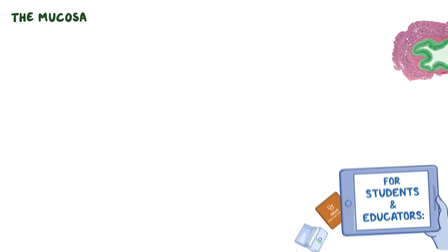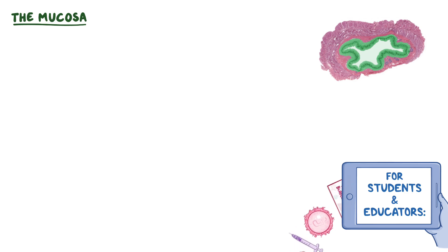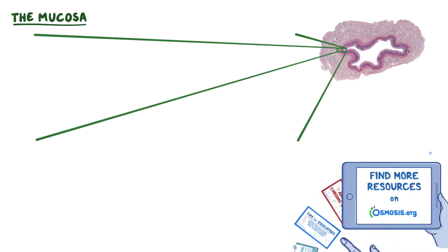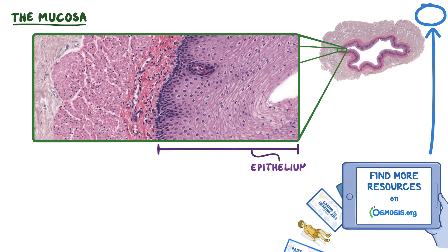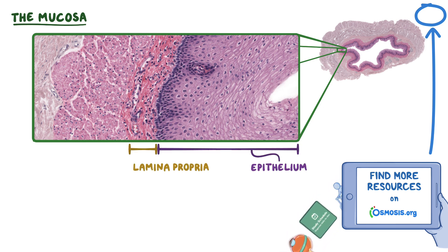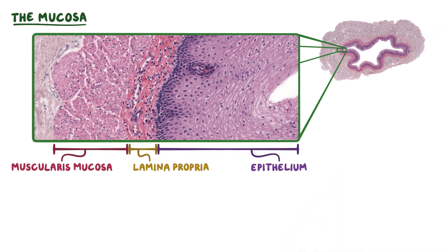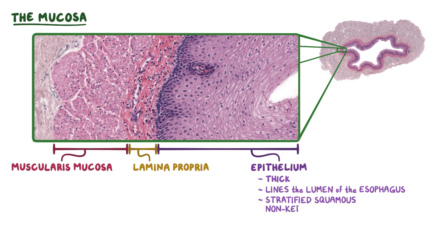The mucosa of the esophagus consists of three main layers. At 20x magnification, we can see each of the layers more clearly: the epithelium, lamina propria, and muscularis mucosa. The thick epithelial layer lines the lumen of the esophagus and consists of stratified squamous non-keratinized cells, which have the typical appearance of flat, overlapping cells that become more flat as they move away from the basal cell layer.